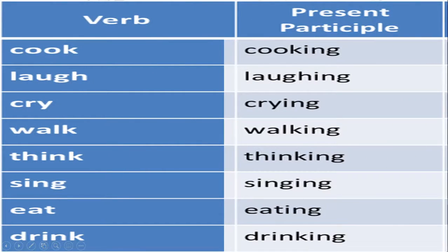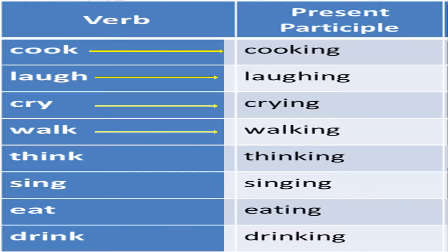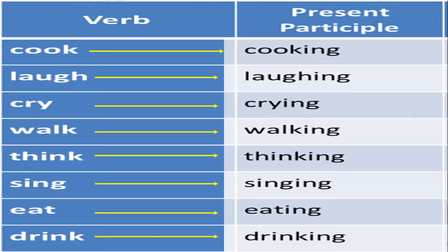Let's look at examples of the present participle. 'Cook' becomes 'cooking,' 'laugh' becomes 'laughing,' 'cry' becomes 'crying,' 'walk' becomes 'walking,' 'think' becomes 'thinking,' 'sing' becomes 'singing,' 'eat' becomes 'eating,' and 'drink' becomes 'drinking.' When you use a verb in a sentence showing the present progressive tense — an action happening in the present that is continuing — that is called the present participle form of the verb.